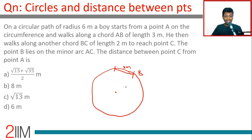He then walks along chord BC of length 2 meters to reach point C. Point B lies on the minor arc AC — this is A, this is B, and C is further away, not in between.